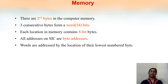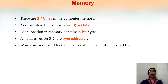These are the specifications of the memory. The total size of the memory is 2 raised to 15 bytes. Three consecutive bytes form a word, which means 24 bits — one byte is 8 bits. Each location in memory contains an 8-bit byte, meaning each location can hold one byte. All addresses on SIC are byte addresses. Words are addressed by the location of their lowest numbered byte.